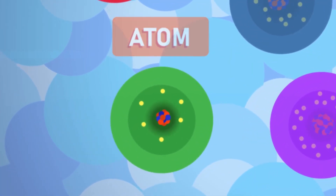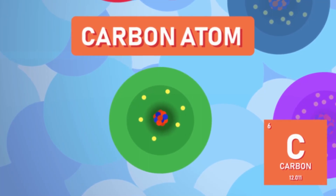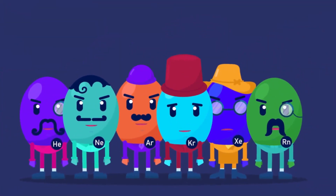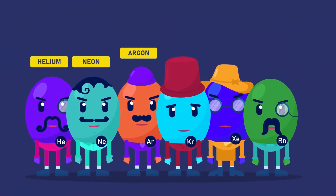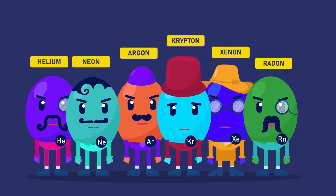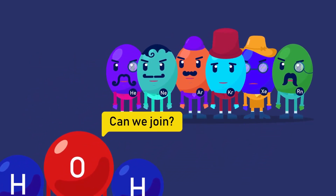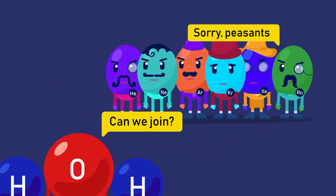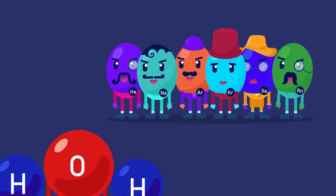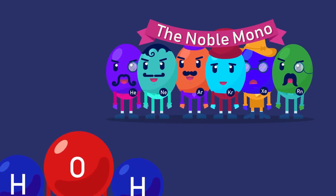Each element contains only one type of atom. Noble gases such as helium, neon, argon, krypton, xenon and radon are elements that exist as individual atoms, which is why they are called monoatomic elements.